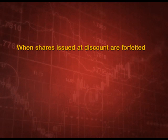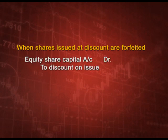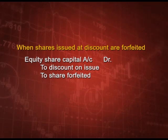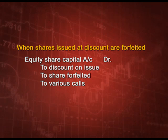When shares issued at discount are forfeited, the entry will be equity share capital account debit and discount on issue will be credited back - because when we issued the shares it was debited, when we take it back it will be credited - to shares forfeited for whatever we have received, and to various calls like allotment and first call for whatever is unpaid. Remember: discount is credited back on forfeiture, and on reissue it will again be debited.